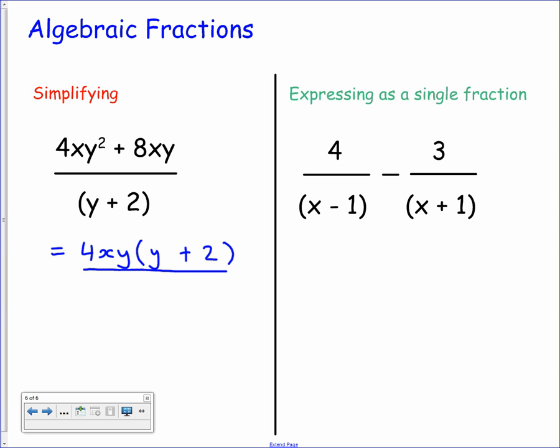That's still all divided by y plus 2. Now you can see here that there's a factor on the numerator and the denominator that will cancel. You have this y plus 2. So if we divide both by y plus 2 we're simply going to be left with 4xy. That would be your final answer.